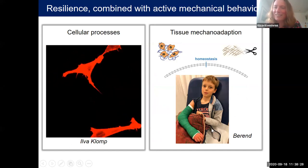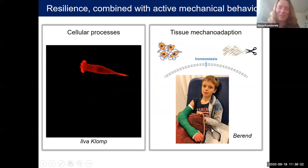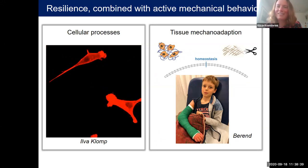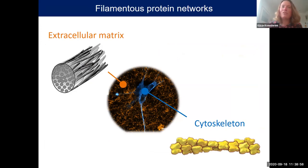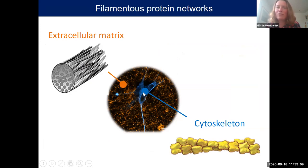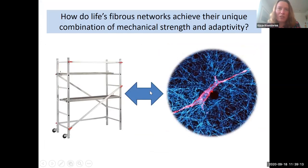The example you see here is actually my younger son Berend, who broke his arm last year after we moved to Delft. Fortunately, the tissue is so dynamic that it's able to repair and adapt. The magic of these special properties is that cells and tissues have a framework made of filamentous proteins. We work on both the extracellular matrix — shown in yellow — and the cytoskeleton inside the cell, colored in blue. The central question we ask is how these filamentous networks achieve their combination of strength and adaptivity.